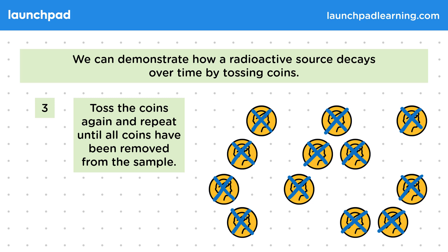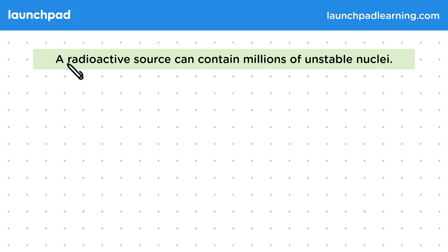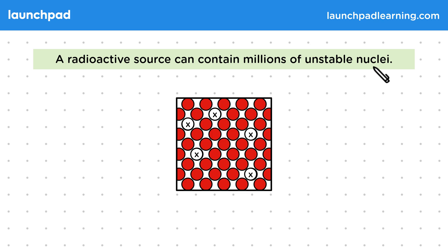We can keep track of the number of coins decaying with each toss and present it on a graph. You aren't expected to remember the process of this experiment, but you may be asked to describe how it relates to radioactive decay. So if radioactive decay is random, how can we predict how quickly a sample will decay? A radioactive source can contain millions of unstable nuclei, so we can give the probability of each nucleus decaying in the next period of time.